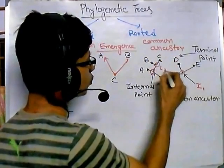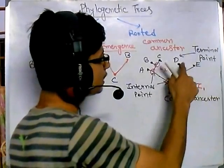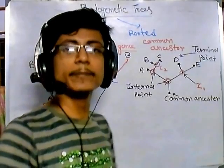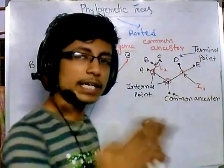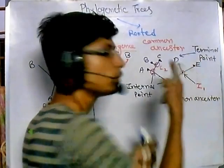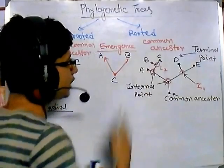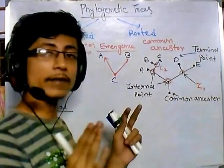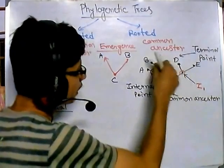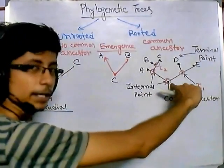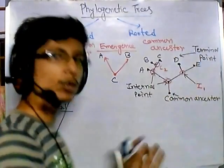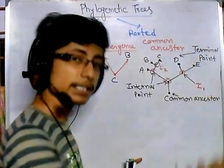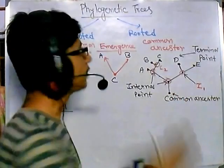Species D and E share a common ancestor at internal point one (I1), and B and C share a common ancestor at internal point two (I2). D and E are more closely related to each other because they share I1. Similarly, B and C share the genetic elements of I2. But B and D are less closely related — they are distantly related. By looking at the phylogenetic tree we can easily determine these relationships.